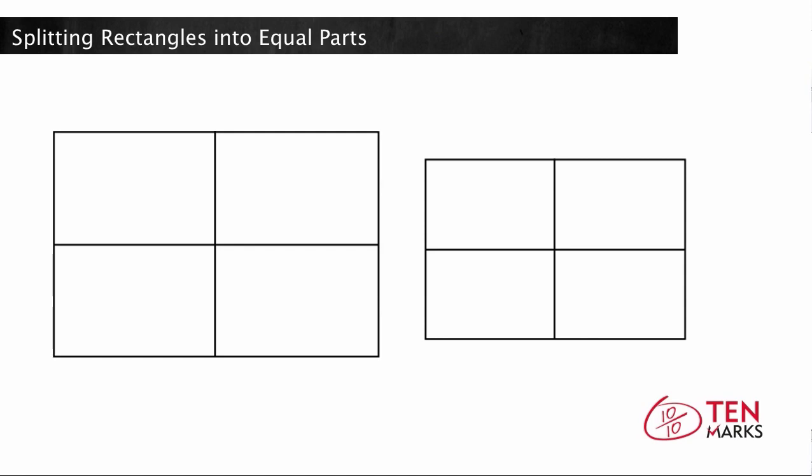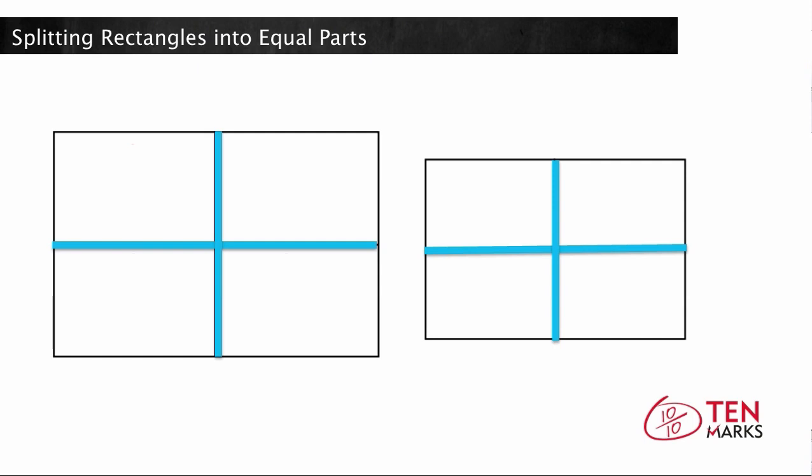These are two different rectangles. One is smaller than the other. Both are split into four equal parts. Each part of the rectangle is one quarter.